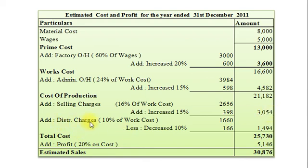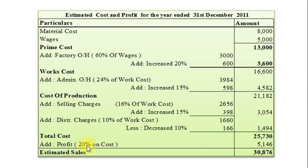Distribution charges = 10% of works cost = 10% × Rs. 16,600 = Rs. 1,660, increased by 10% = Rs. 166, giving total distribution charges of Rs. 1,494. Total cost = Rs. 25,730. Desired profit at 20% on cost = 20% × Rs. 25,730 = Rs. 5,146. Final estimated selling price = Rs. 30,876.